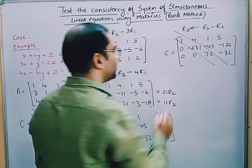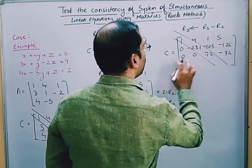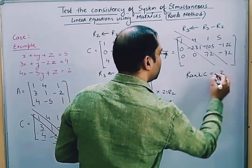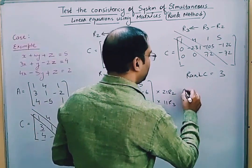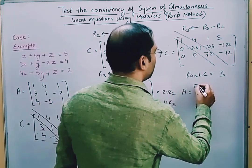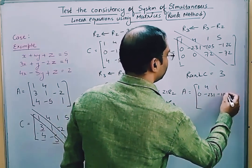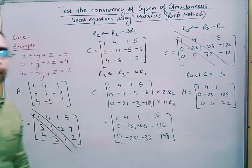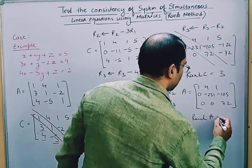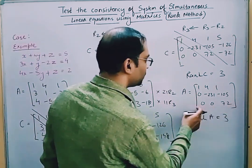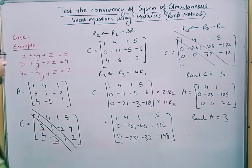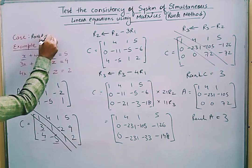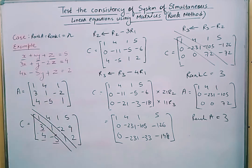Matrix C has three non-zero rows, so the rank of C is 3. Extracting matrix A from the first three columns of the upper triangular form, it also has three non-zero rows, giving rank of A equal to 3. The number of unknown variables N is also 3. Since rank of A = rank of C = N = 3, this is case 1.